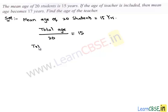So we have total age of 20 students is 15 times 20, which is equal to 300 years.